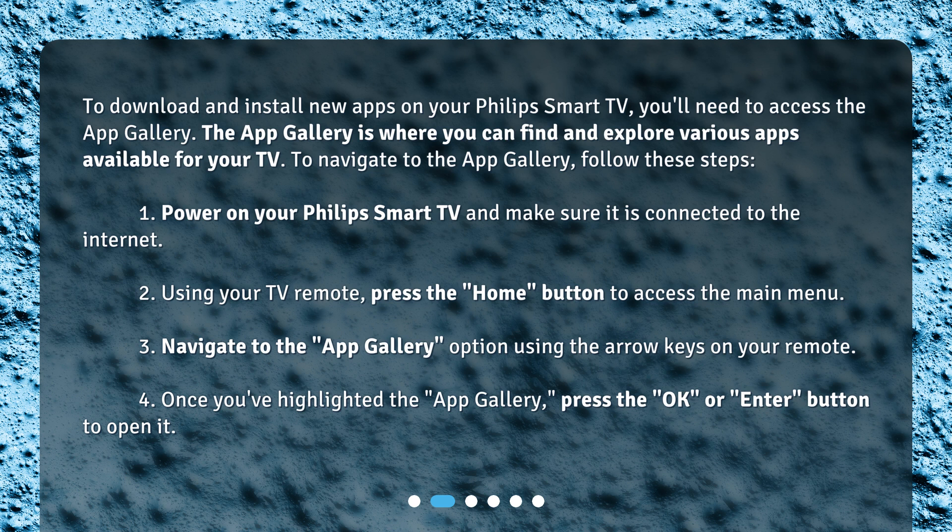1. Power on your Philips Smart TV and make sure it is connected to the Internet. 2. Using your TV remote, press the Home button to access the main menu. 3. Navigate to the App Gallery option using the arrow keys on your remote.